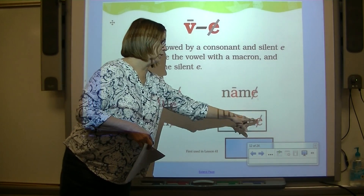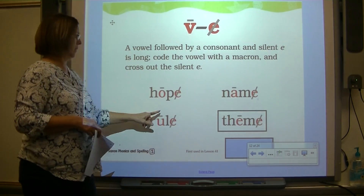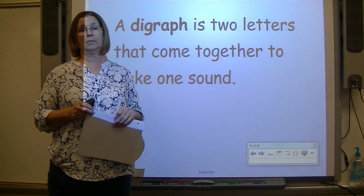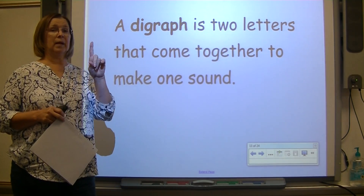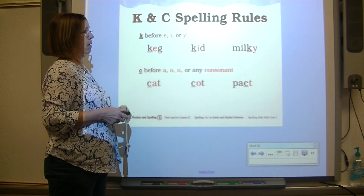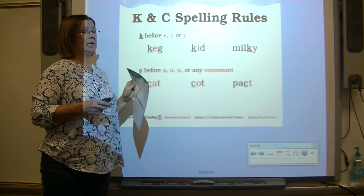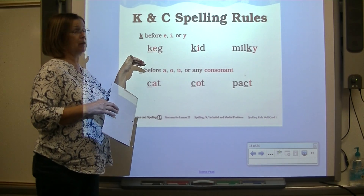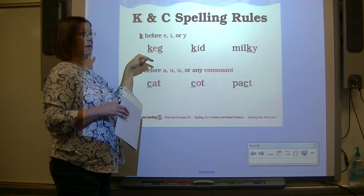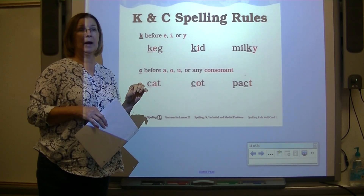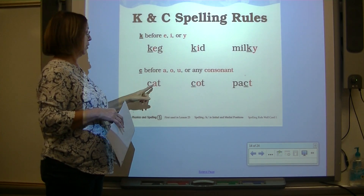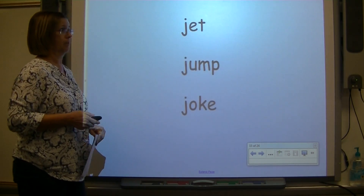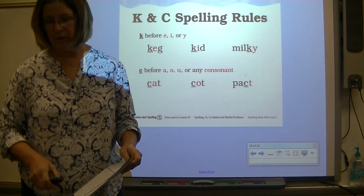Cross out the sneaky E in each example and put a macron over the vowel. A digraph is two letters that come together to make one sound. Now when spelling K at the beginning or in the middle of a word: we use K before E, I, or Y; C comes before A, O, U, or any consonant.